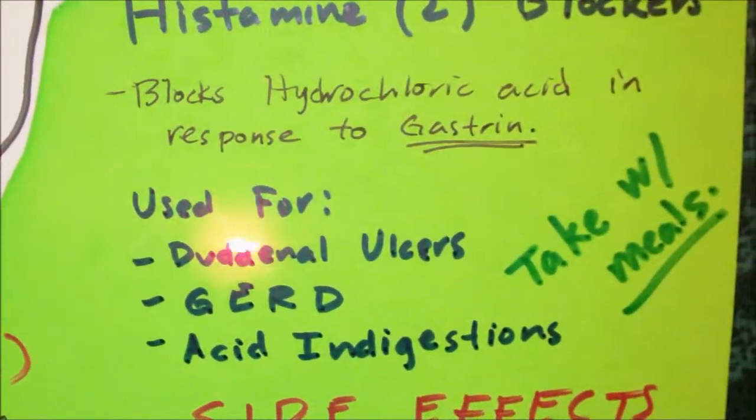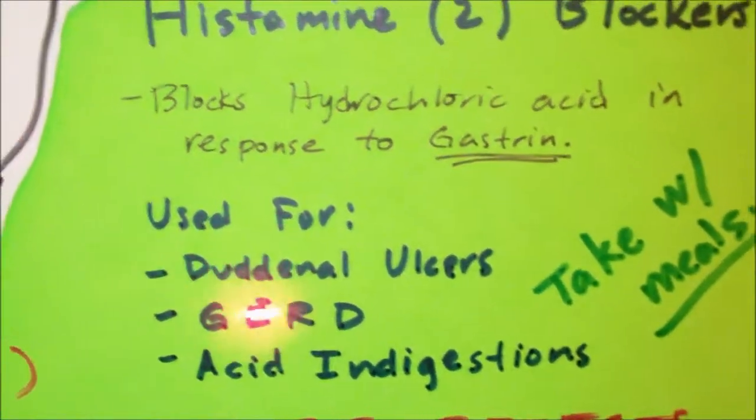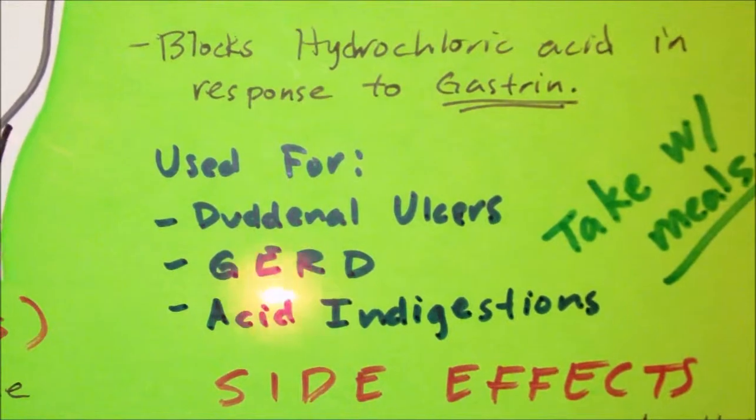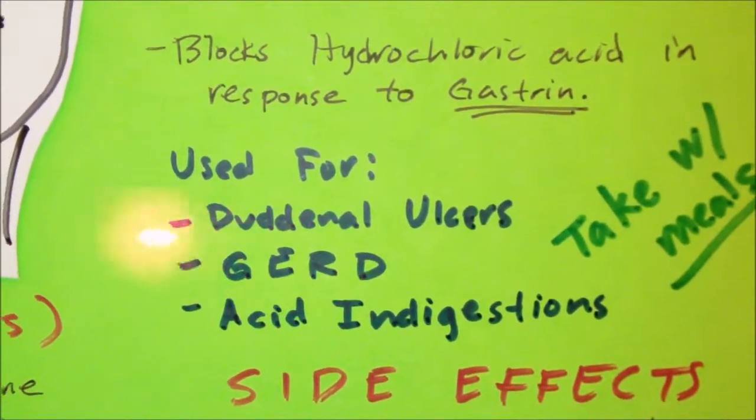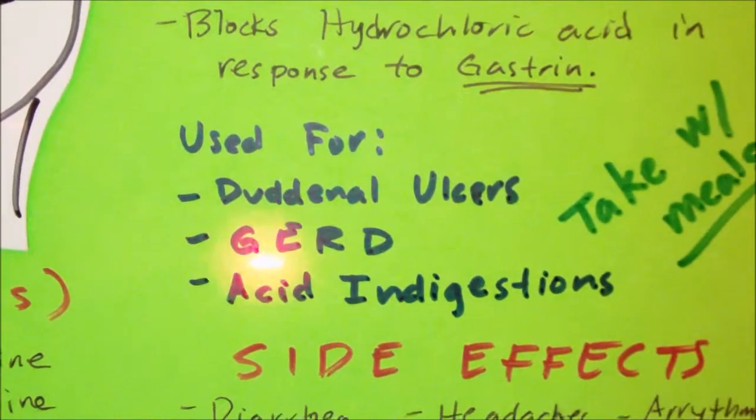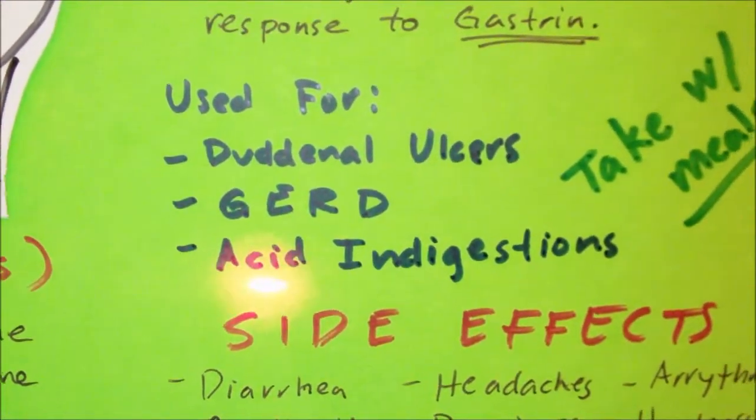These drugs are usually used as a treatment for duodenal ulcers. It can also be used as a prevention for stress-induced ulcers and maybe an acute GI bleeding.